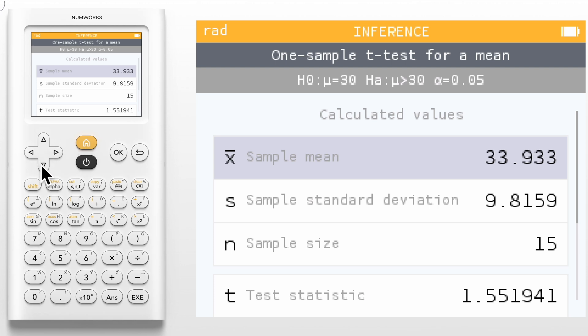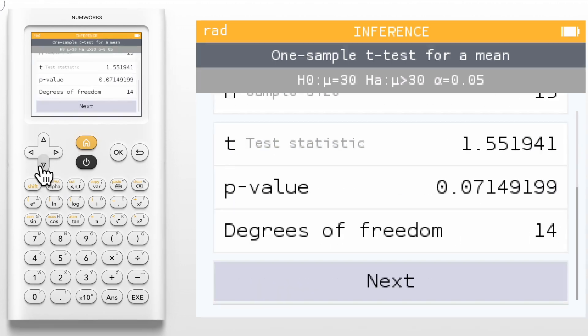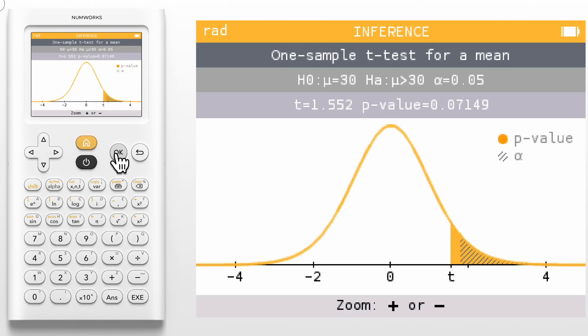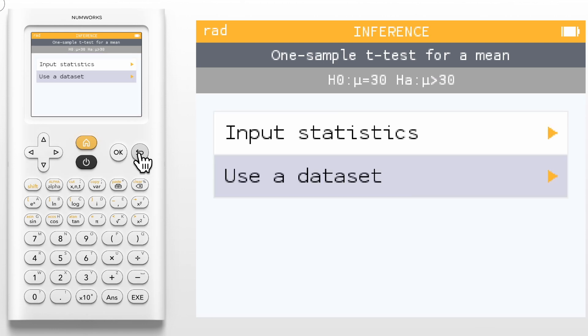The final screen will provide a visual representation. We have the normal curve with the test statistic marked and the shaded region representing the p-value. We also have the rejection region shaded based on the alpha level. All relevant values are shown in the top banners including the full name of the test.